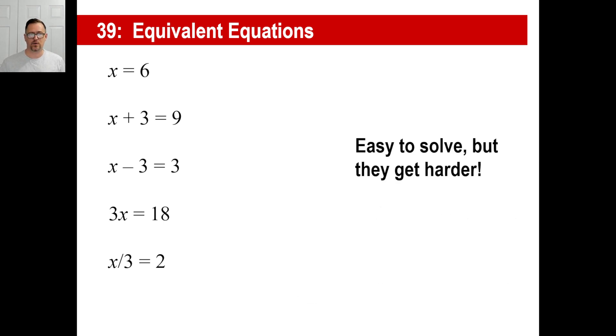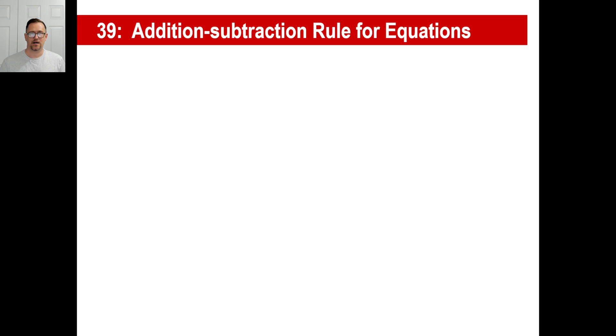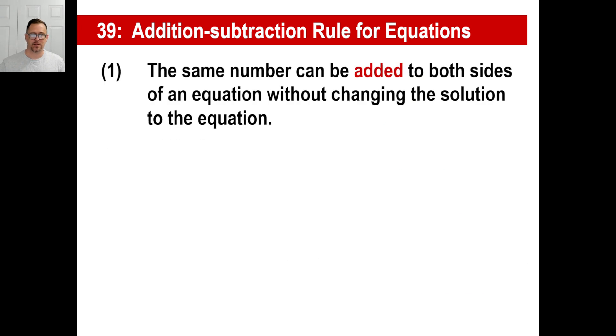These are easy to solve, but they get more interesting. Let me, I want you to write this down or at least a shortened version of this for your notes. Make sure you're still keeping your notes with a little notebook paper with a 39 in the right top corner. So write this down. This is called the addition-subtraction rule for equations. Number one: the same number can be added to both sides of an equation without changing the solution to the equation.